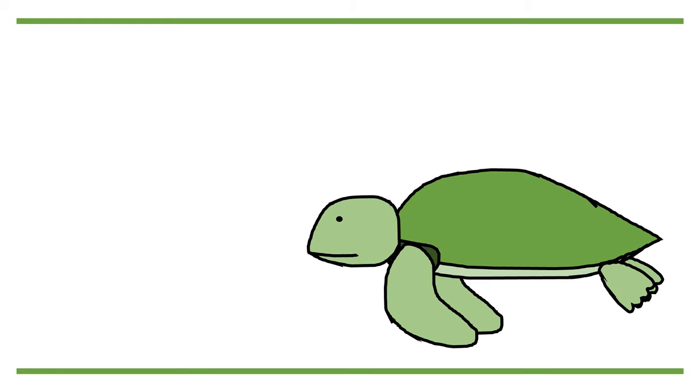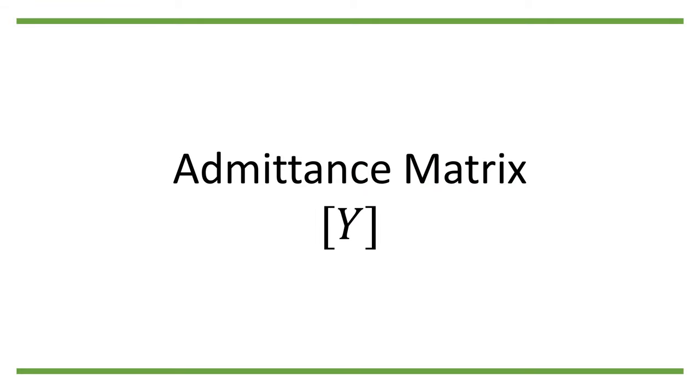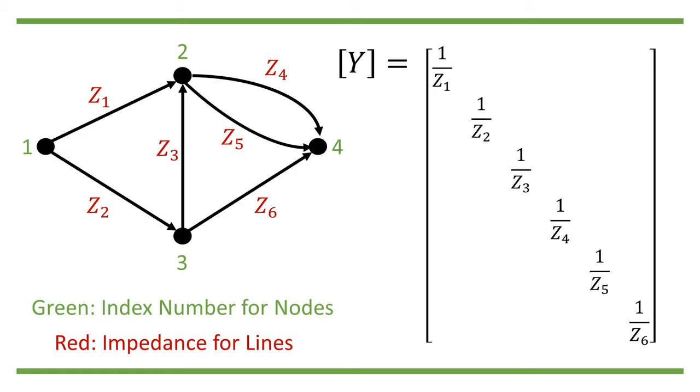Ohm's law can also be written in compact form if we define an n by n admittance matrix Y. Admittance is basically the inverse of the impedance Z. And in most practical cases, the admittance matrix will be a diagonal matrix, where the diagonal terms indicate the admittance of each line.